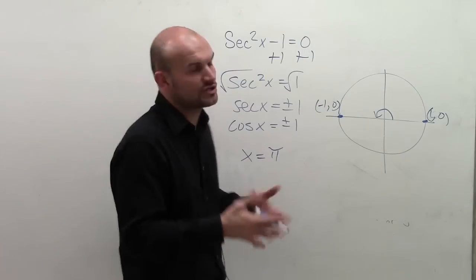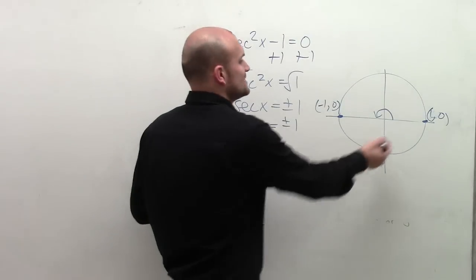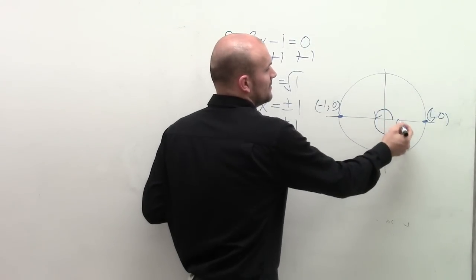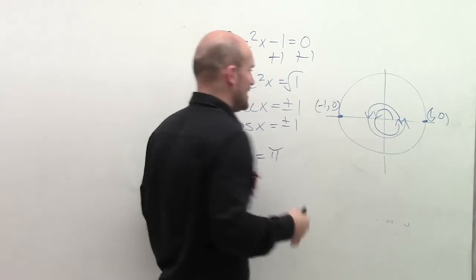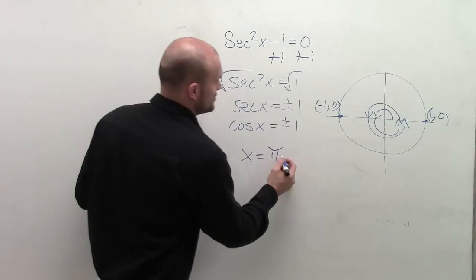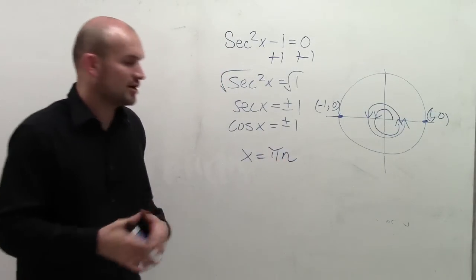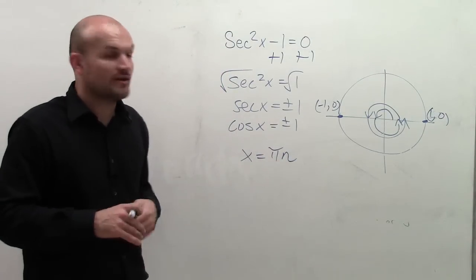And remember, we're trying to find all solutions. So it's π, 2π, 3π, 4π, and in the negative direction. We can express this by multiplying by our variable, which in this problem I'll use as n.